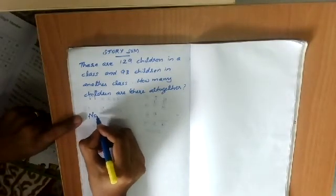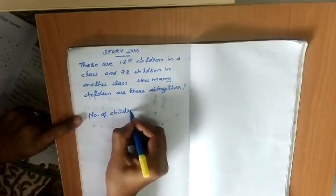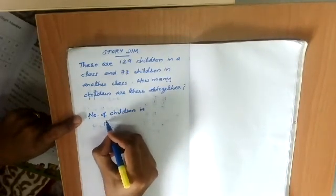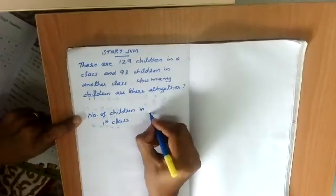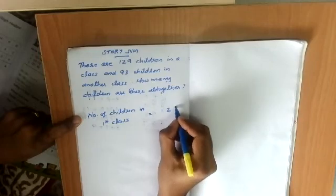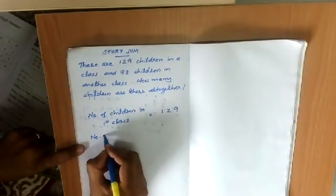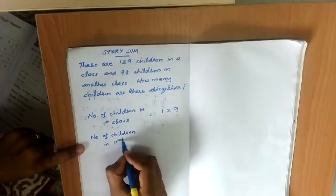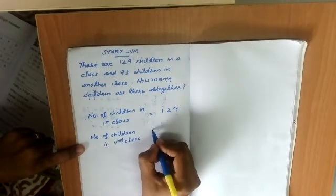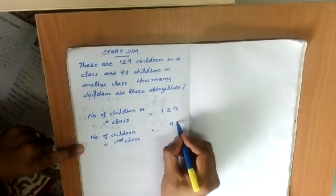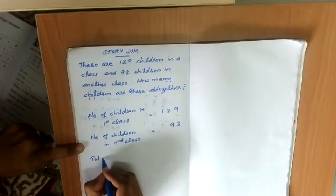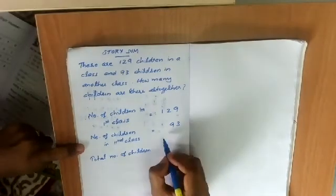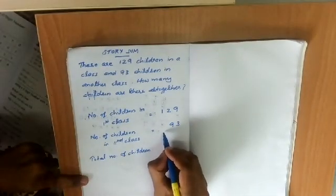We write out the steps. Number of children in the first class is equal to 129. Number of children in the second class is given as 93. We have to find the total number of children, which means we need to add these two numbers.